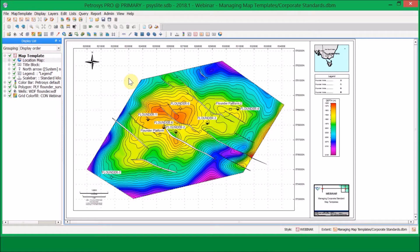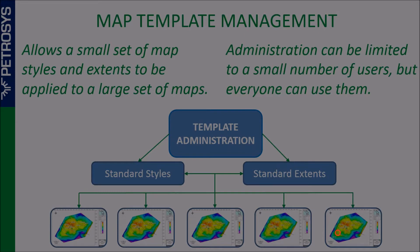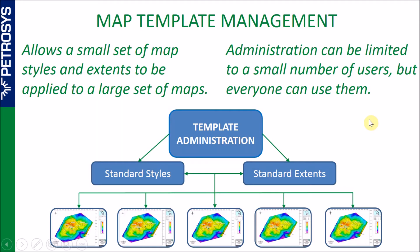That covers the different methods available for setting up your administration permissions and how to edit and administer your map templates in Petrasyst. To summarize map template management: setting up your corporate standards allows you to create a small set of map styles and extents which can be applied to a large set of maps — completely different from map sheets where you'd have hundreds of different sheets. With templates, you can have a small number of styles applied to hundreds of different maps.